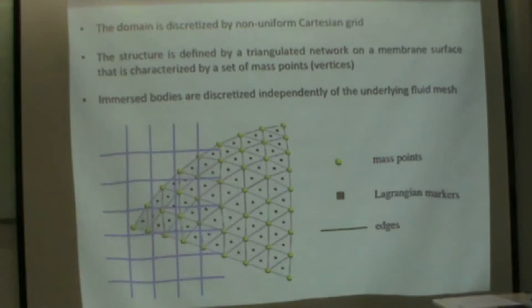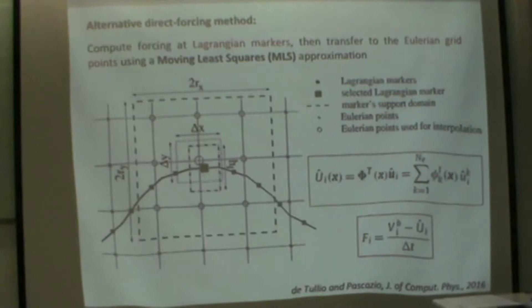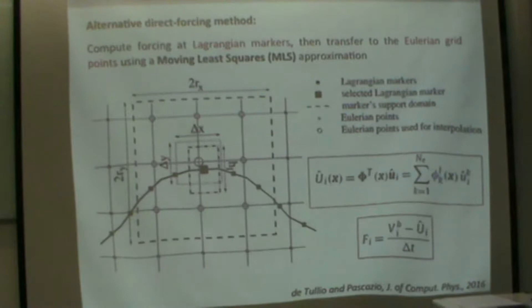How to impose the boundary conditions? Given a Lagrangian point, the triangle centroid, we build a support domain on the Eulerian mesh, including 27 points in 3D, and we compute the forcing. We use moving least squares approximation, that means the Lagrangian variables are interpolated using neighbors of the Eulerian mesh, and this phi is obtained by a moving least squares minimization problem. Finding this velocity on the Lagrangian marker, we can find the forcing to impose the boundary condition, where v high is the velocity coming from the structural solver or from imposed movement.